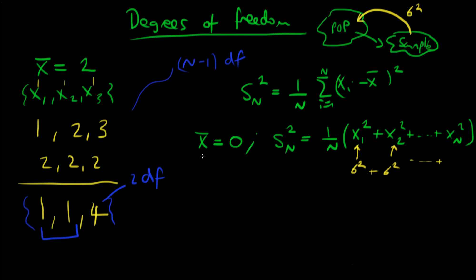But because we know that the sample mean is zero, this last term isn't actually free to vary — it has a variance of zero. It's constrained because we have freely varied our n minus 1 observations, and each of those terms has a corresponding variance, but the last term itself isn't free to vary at all.